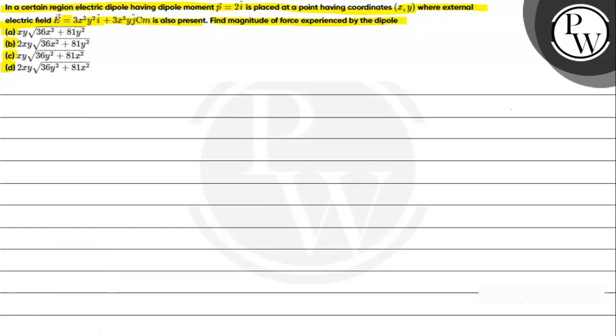For this question, the key concept we need to understand is the concept of potential energy - potential energy stored in a dipole in an electric field. This expression we have already studied, that is U equals minus P bar dot E bar.